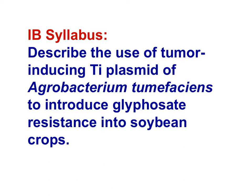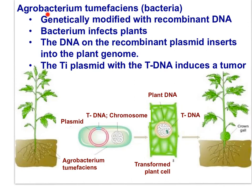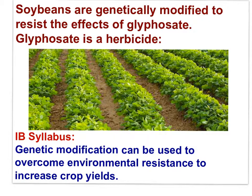Agrobacterium tumefaciens is a bacterial species which naturally infects plants, but scientists genetically modify it with a recombinant plasmid. The bacterium infects plants and the DNA on the recombinant plasmid inserts itself into the plant genome. The Ti plasmid with the T-DNA induces a tumor, but more importantly, genes on the plasmid cause the bacterial genome to insert itself into the plant genome.